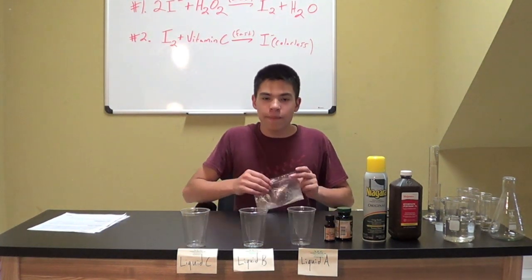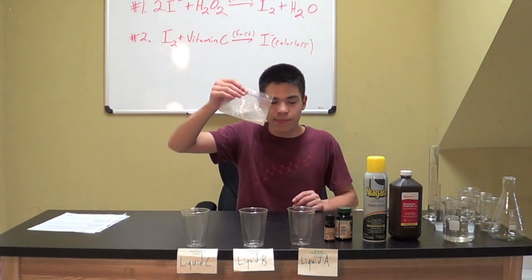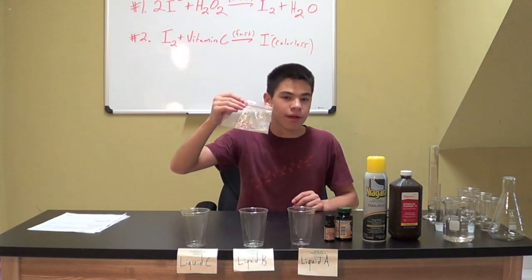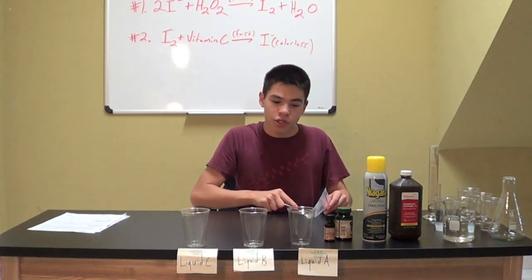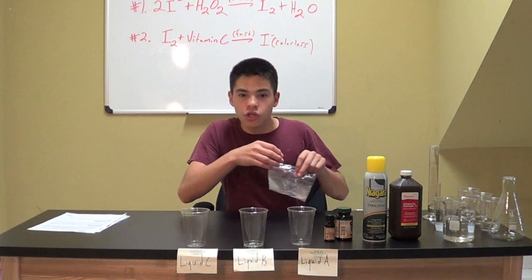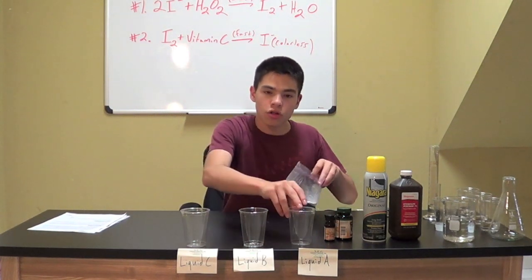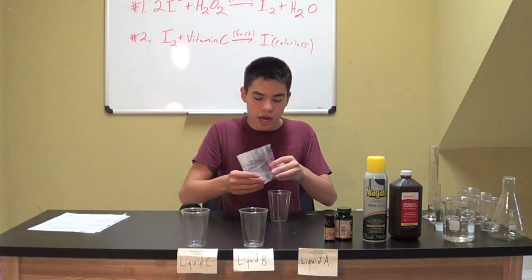We are going to start by taking 1,000 milligrams of the vitamin C tablet, placing them in a plastic bag, and using a heavy spoon to crush them into a fine powder. You are then going to add all of this powder into a cup.